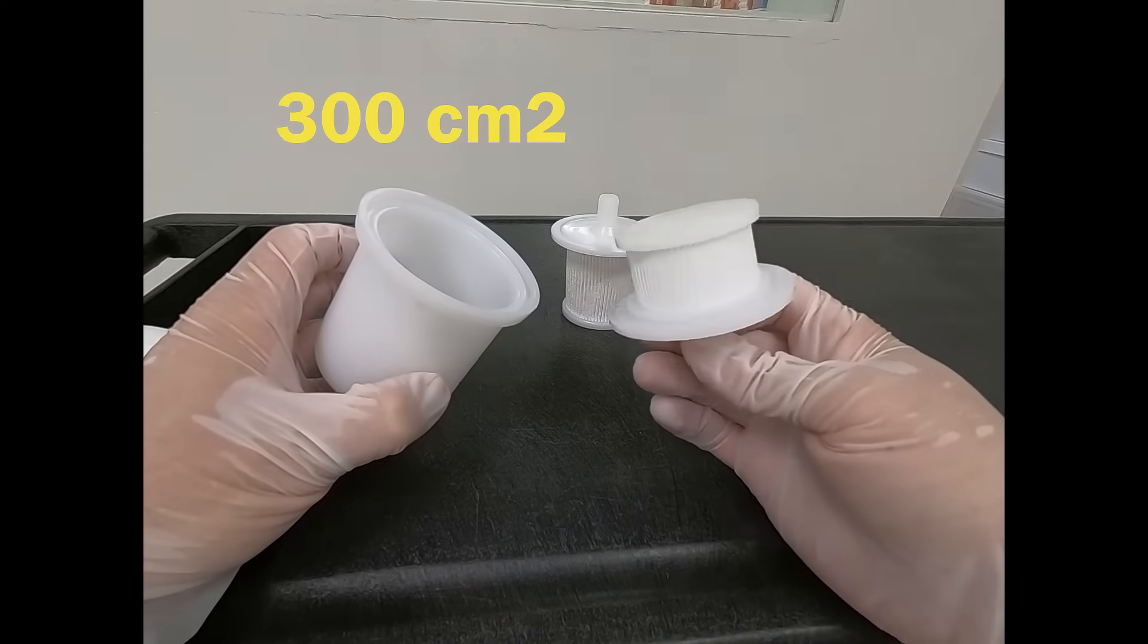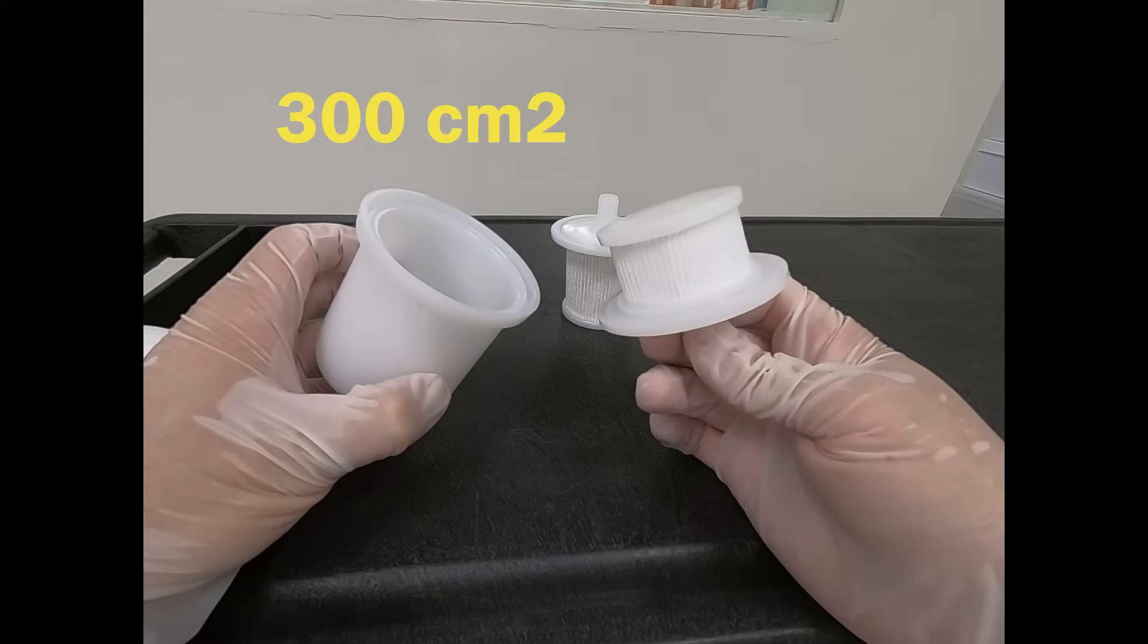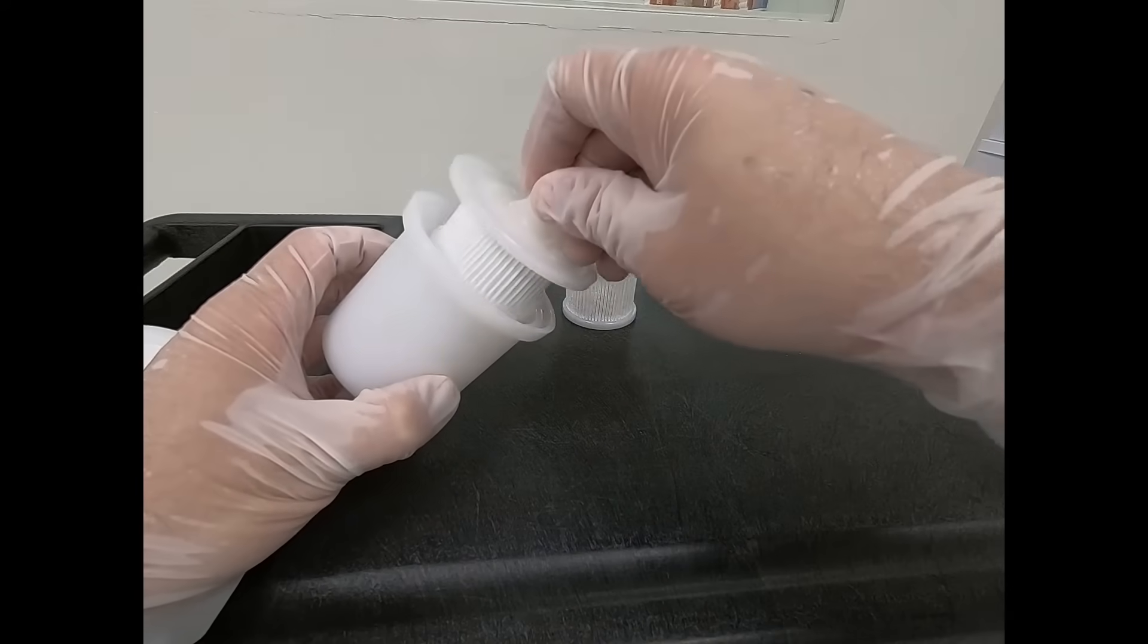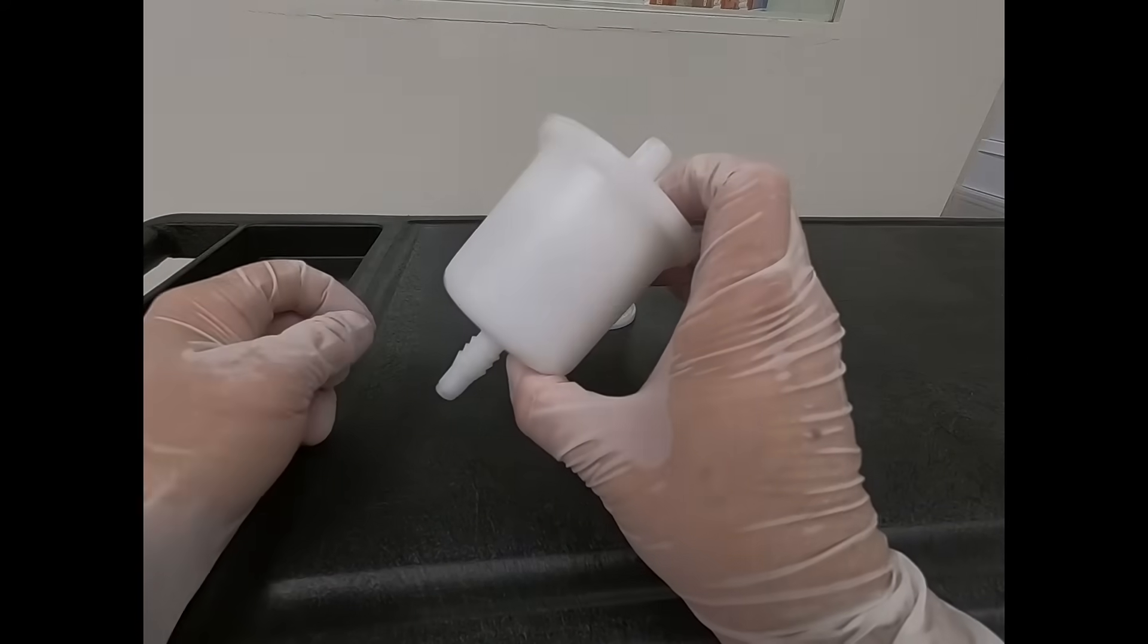The smaller 300 square centimeter filters provide our customers with a more economic option for field filtering when low turbidity is encountered or expected.